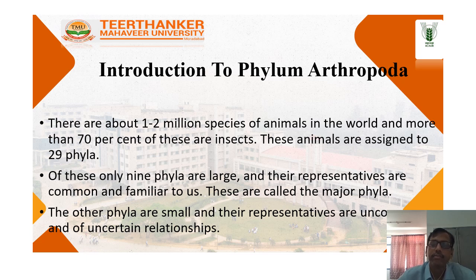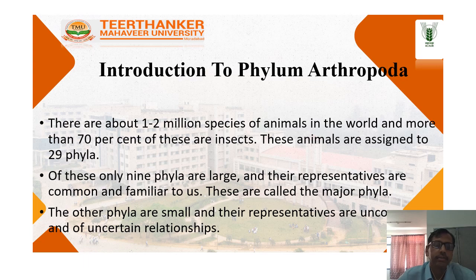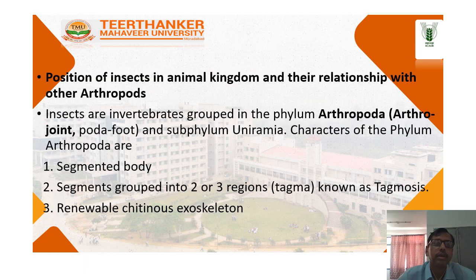These animals are assigned to 29 phyla. Of these, only 9 phyla are large and their representatives are common and familiar to us. These are called the major phyla. Other phyla are small and their representatives are uncommon. Position of Insects in Animal Kingdom and their Relationship with other Arthropods.